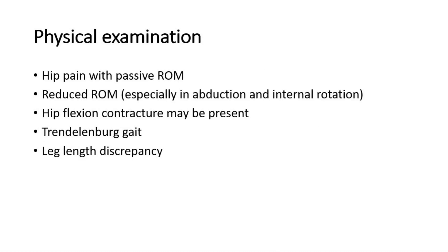On physical examination, the child often demonstrates hip pain with a passive range of movement, and the range of motion may be reduced, especially in abduction and internal rotation of the hip. Hip flexion contracture may be seen in long-standing Perthes disease. Some children may present with Trendelenburg gait and also leg length discrepancy for prolonged disease.